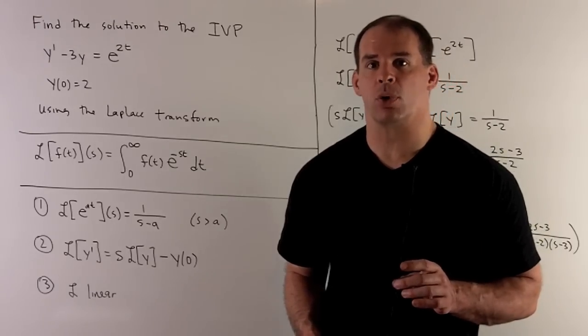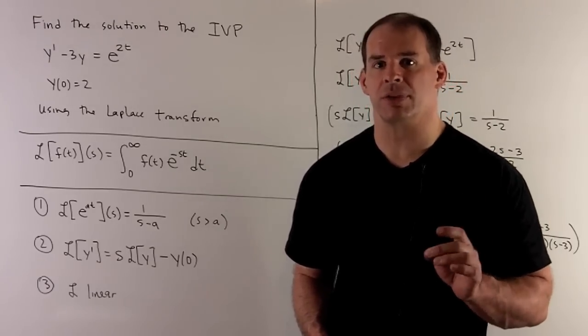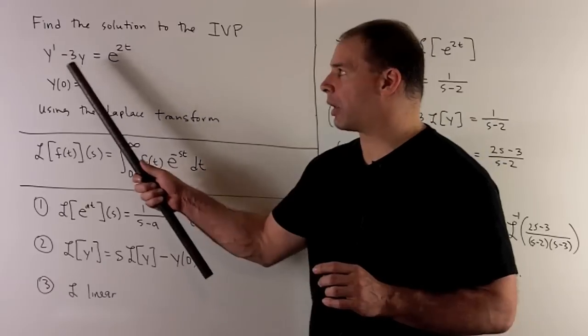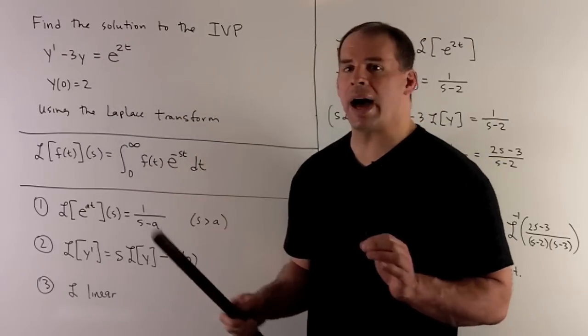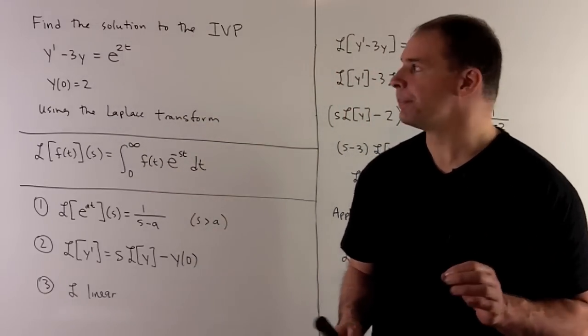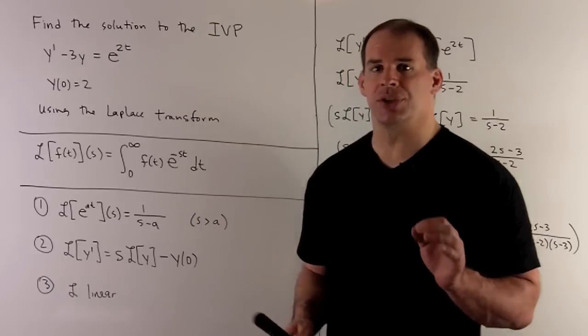Using the Laplace transform, find the solution to the initial value problem: y prime minus 3y equals e to the 2t, y of 0 equals 2.